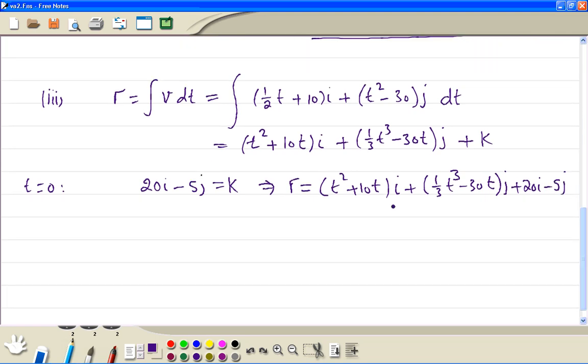Now we have the i and j combined together. So we have r equals t squared plus 10t plus 20i, and plus one third t cubed minus 30t minus 5j meters.